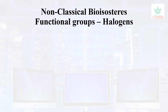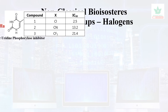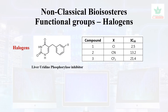For halogens as bioisosteres, chlorine can be interchanged with CN or CF3. The IC50 value increases with these replacements, whereas chlorine itself has a lower IC50 value. This concludes the short overview of bioisosteres.